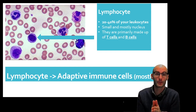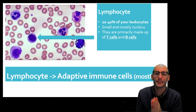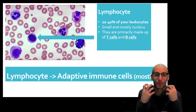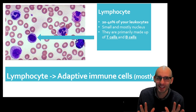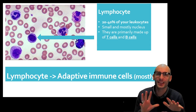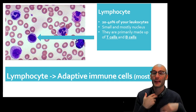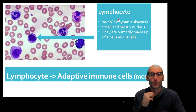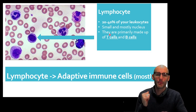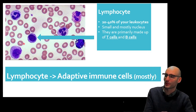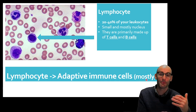Circulatory adaptive cells are 20 to 40% of your leukocytes, so 20 to 40% of your white blood cells, and we call them a lymphocyte. A lymphocyte, which gives you a hint about why we think of the adaptive immune system as primarily the cells of the lymphatic system. They do circulate, and they are small and they mostly contain nucleus, and they're primarily made up of those T cells and B cells. So lymphocytes are primarily adaptive immune cells making up your T and B cells.